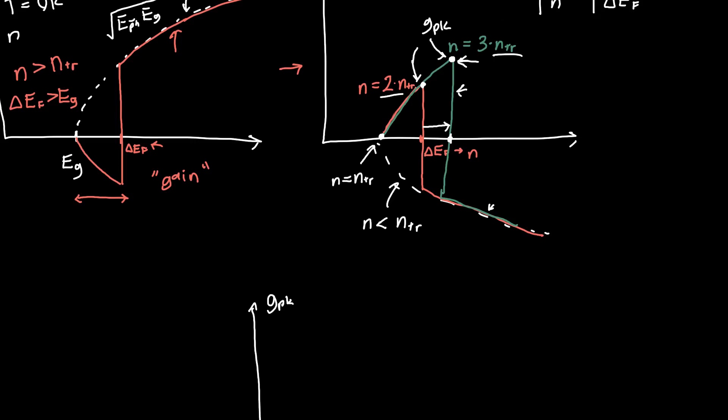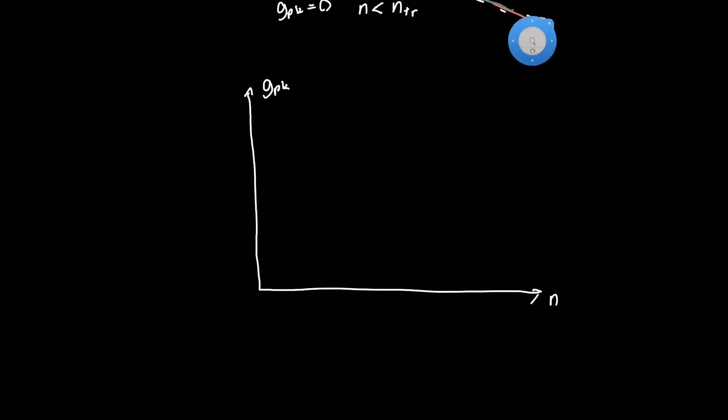And if our carrier density was equal to the transparency carrier density, our peak gain is just zero, because we never get gain for any carrier density lower than the transparency. We will never get gain, so we can plot one point on this graph. We know that at the transparency carrier density, our peak gain is going to be zero.